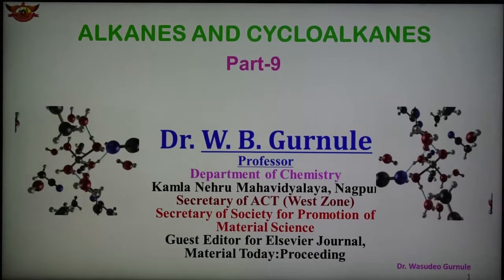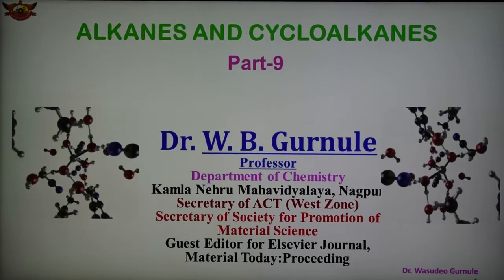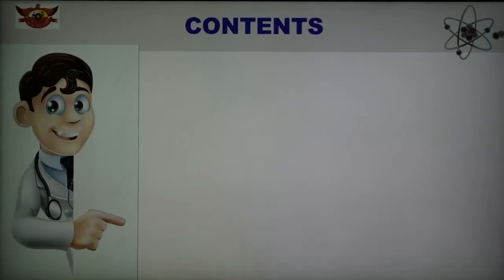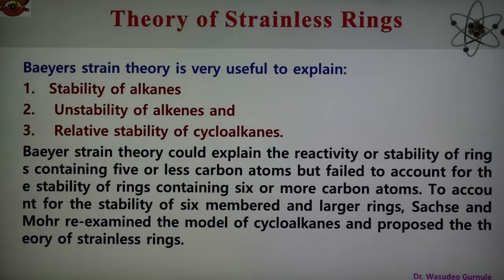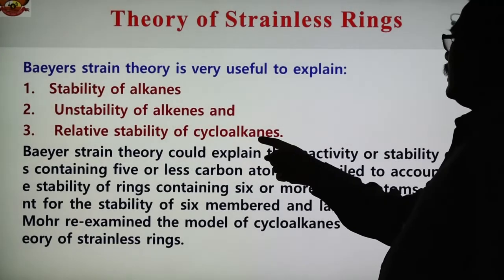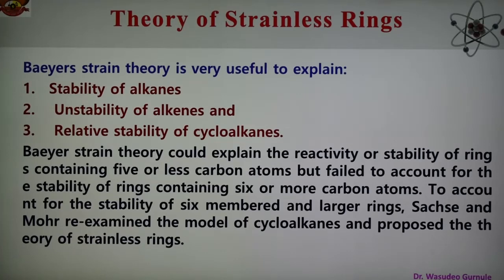The topic is alkanes and cycloalkanes, and this is part number 9 of the cycloalkanes. In this part we are discussing the theory of strainless ring and the relative stability of cycloalkanes. Baeyer's strain theory is very useful to explain the stability of alkanes, instability of alkenes, and relative stability of cycloalkanes. It explains the stability of rings containing 5 or fewer carbon atoms, but failed to explain the stability of rings containing 6 or more carbon atoms.